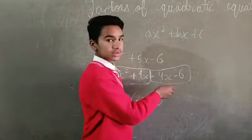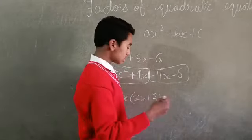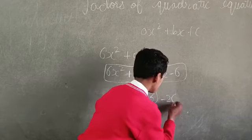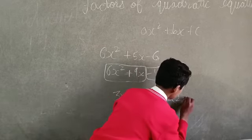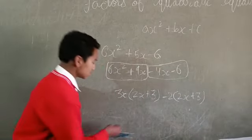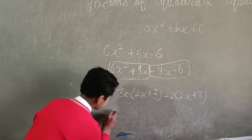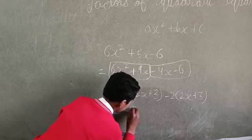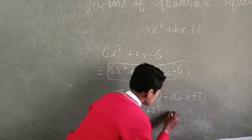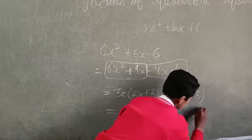And in this group, minus 2 is common. So, minus 2 multiplied by 2x plus 3. The factors are same. So, it will become 2x plus 3 into 3x minus 2.